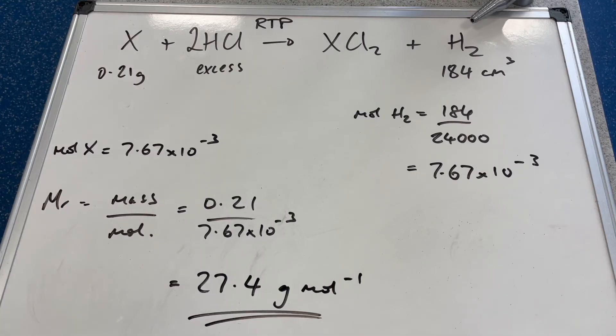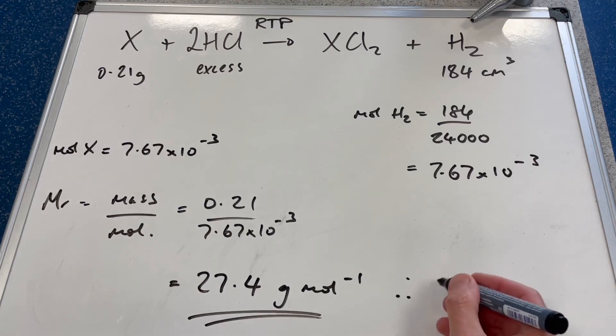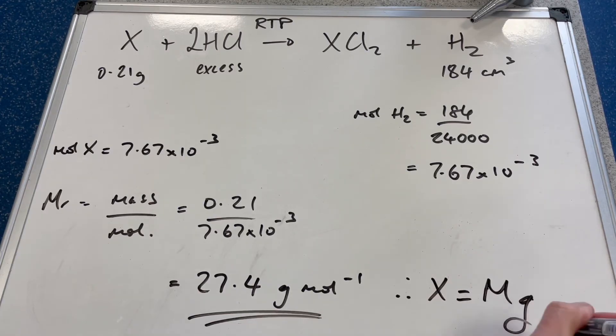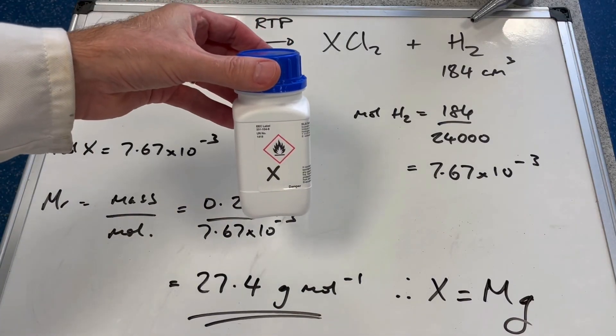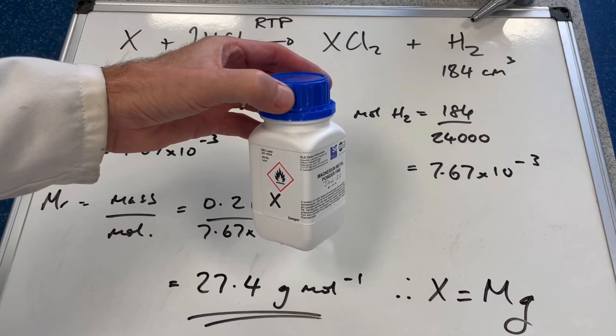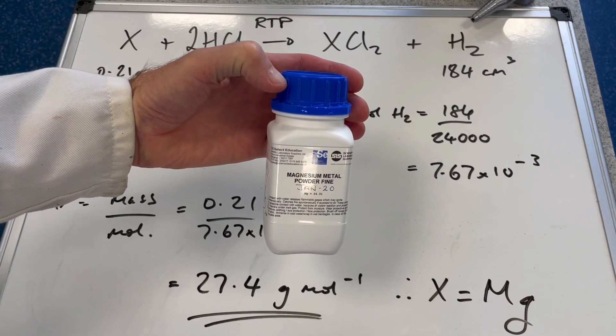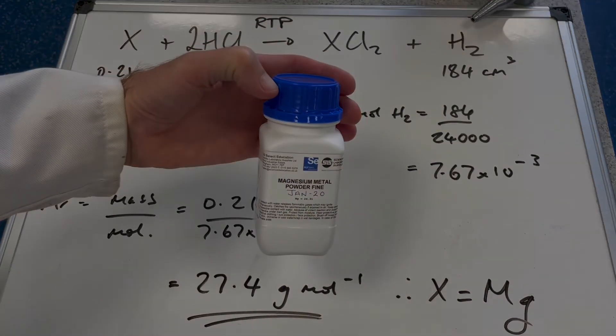Which member of group 2 must X be? There isn't a member of group 2 that has exactly that as its MR, but the closest match is magnesium. You'd have to say therefore X equals magnesium. If I just bring the chemical bottle, that's X. I'll rotate it - hopefully you can see it was indeed magnesium.